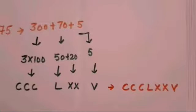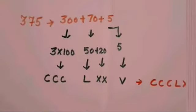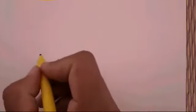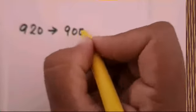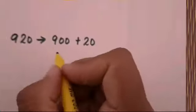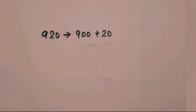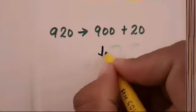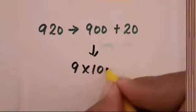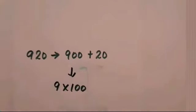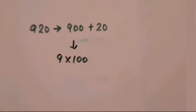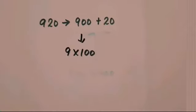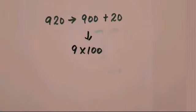Similarly, if I want to represent 920, it is formed through 900 plus 20. Now we can write 900 as 9 times of 100, but we cannot represent 900 by using 100 alone, because we cannot represent any number in Roman numerals using the same symbol more than 3 times, and here it would be 9 times.